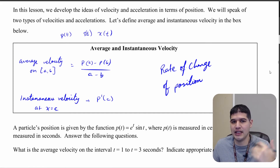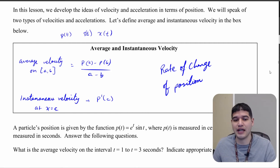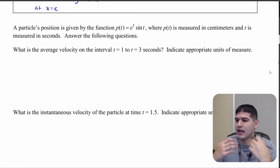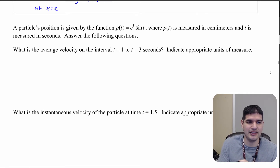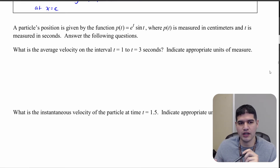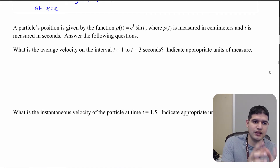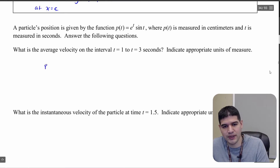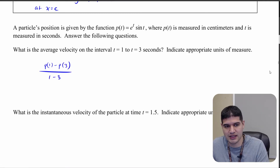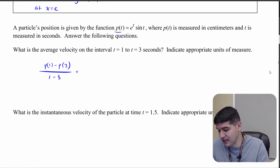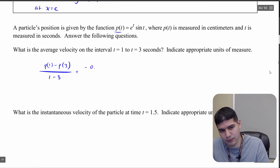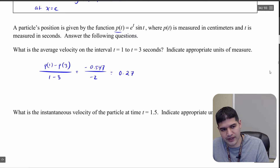Notice I have specifically not said anything about speed, because velocity includes direction. Let's look at an example: a particle's position is given by p of t equals e to the t times sine t, where p of t is measured in centimeters and time is in seconds. We want to find the average velocity from t equals 1 to t equals 3, so we compute p of 1 minus p of 3 over 1 minus 3. Putting that into the calculator gives negative 0.547 over negative 2, which simplifies to 0.274.